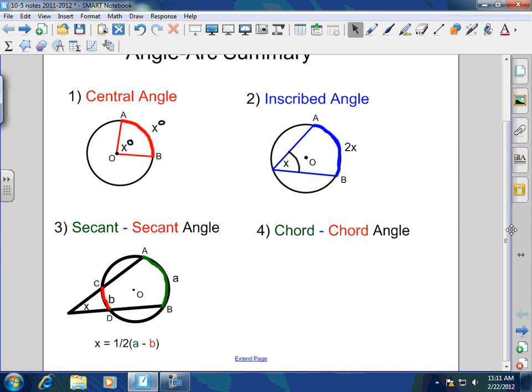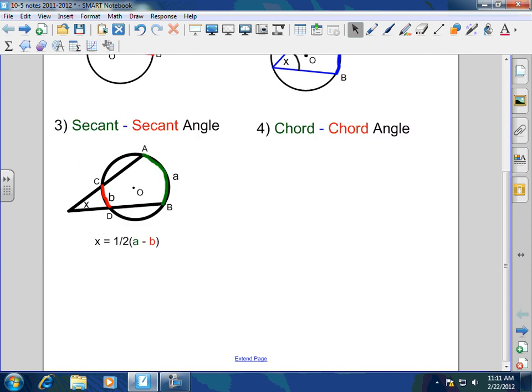Then we have what's called the secant-secant angle. And the secant-secant angle we've also seen as well. If you could tell with the color coded here, we've got X equals A minus B and half of that. So it's half of A minus B. Green and red. That's the secant-secant.